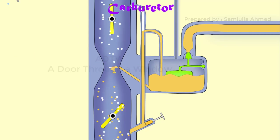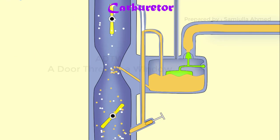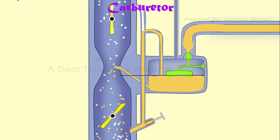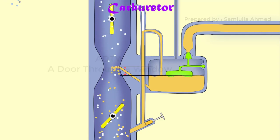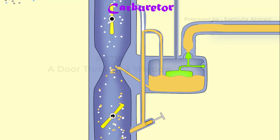To avoid overflow of the fuel through the jet, the level of the fuel in the float chamber is maintained at a level slightly below the tip of the fuel discharge nozzle.